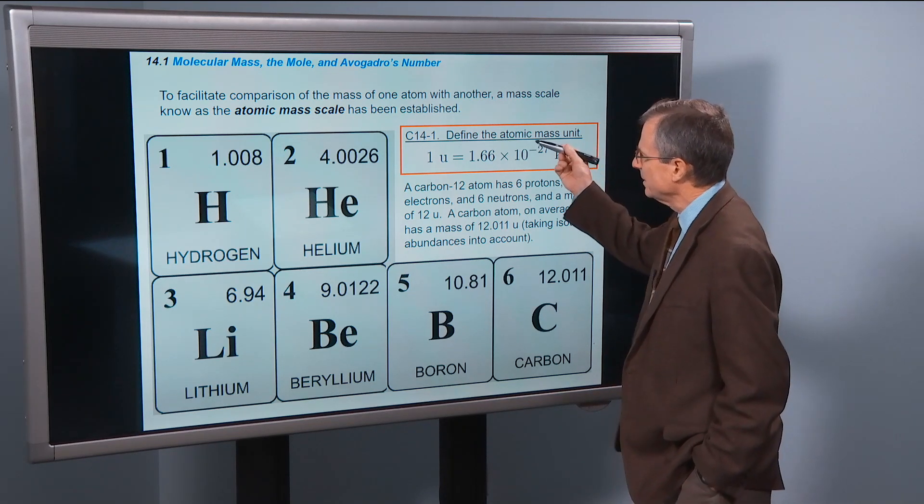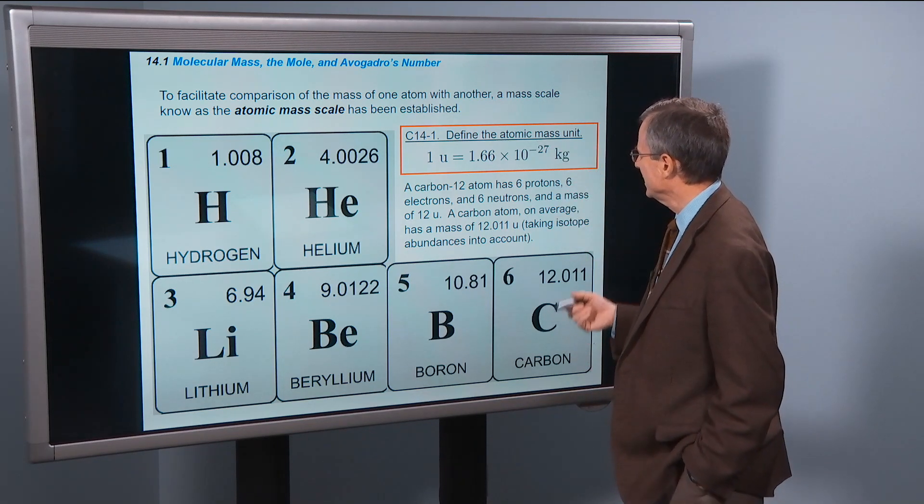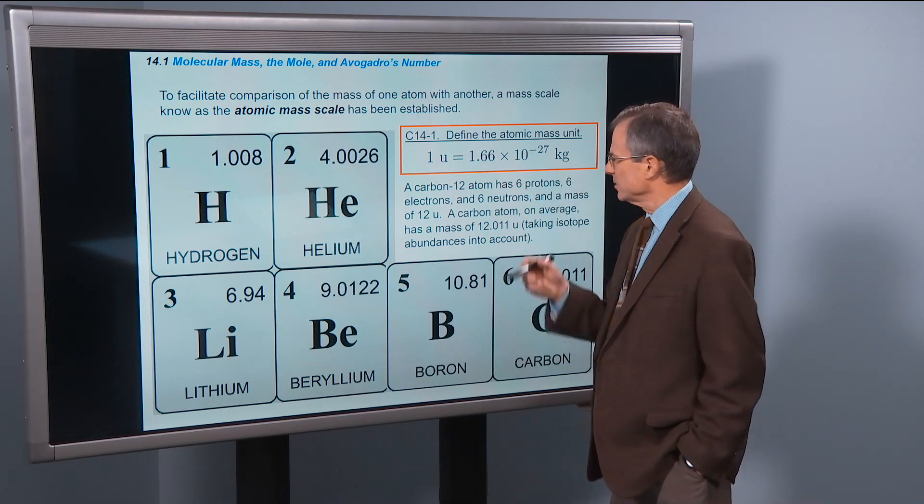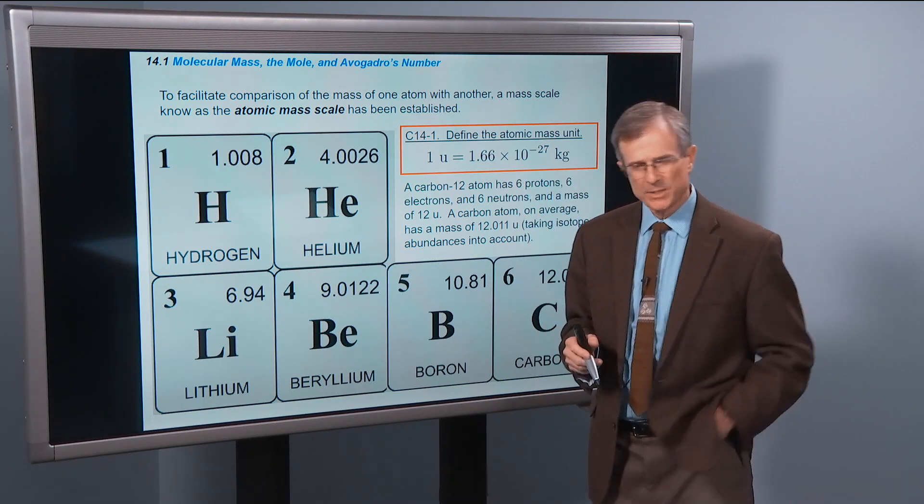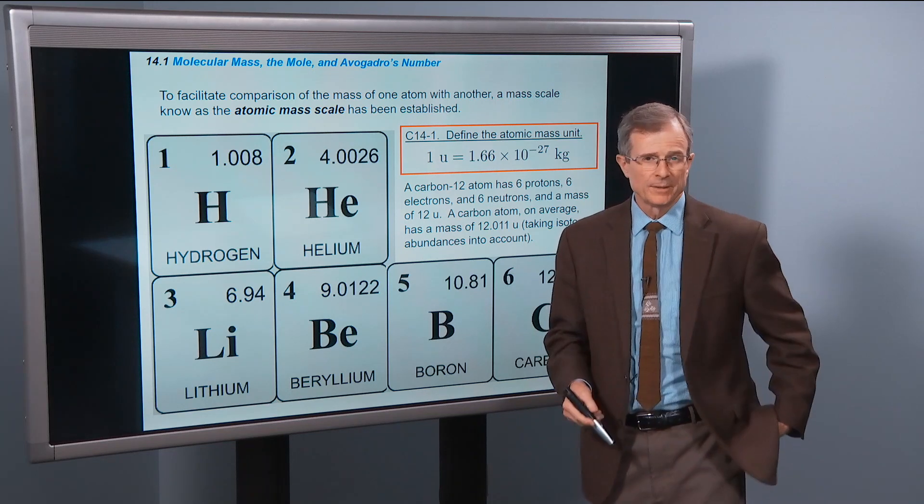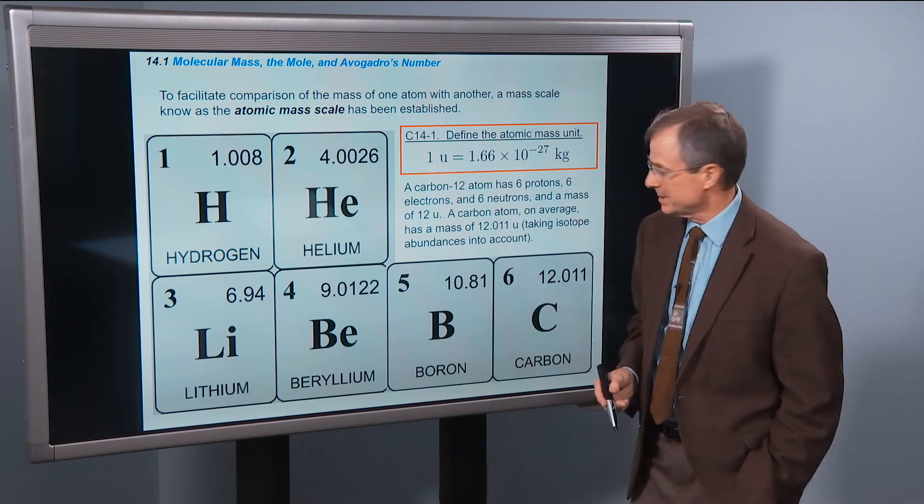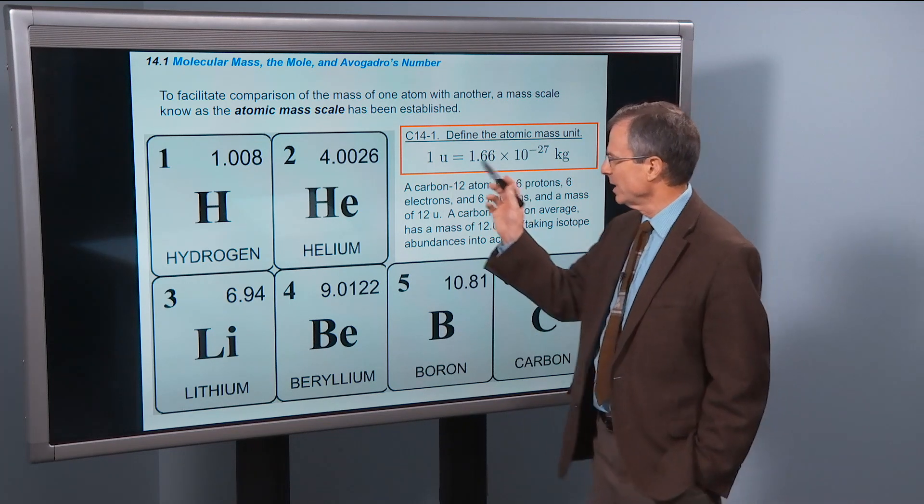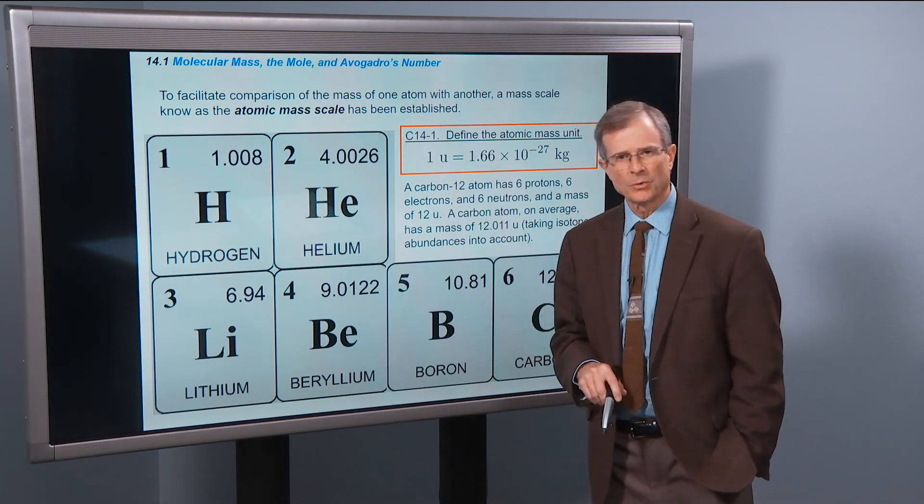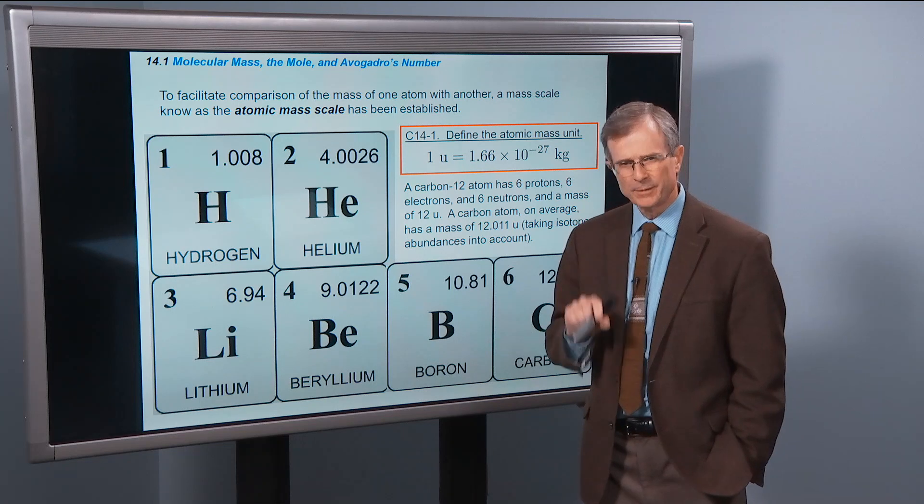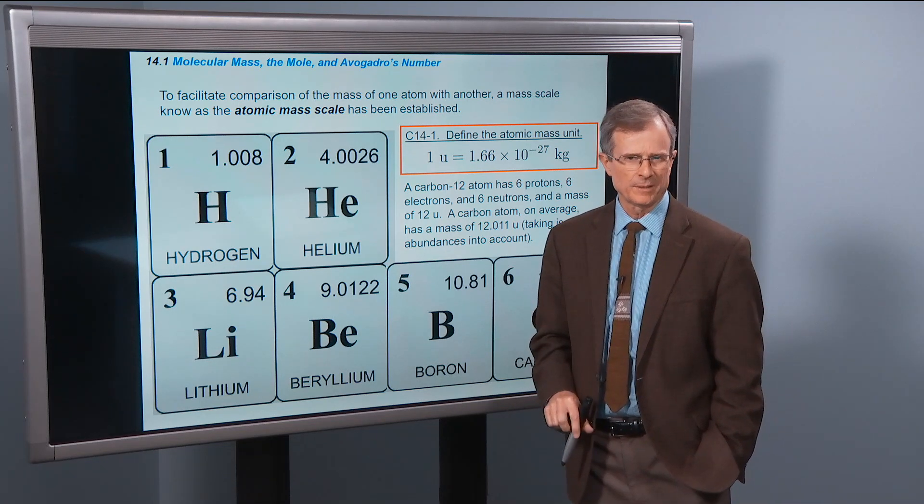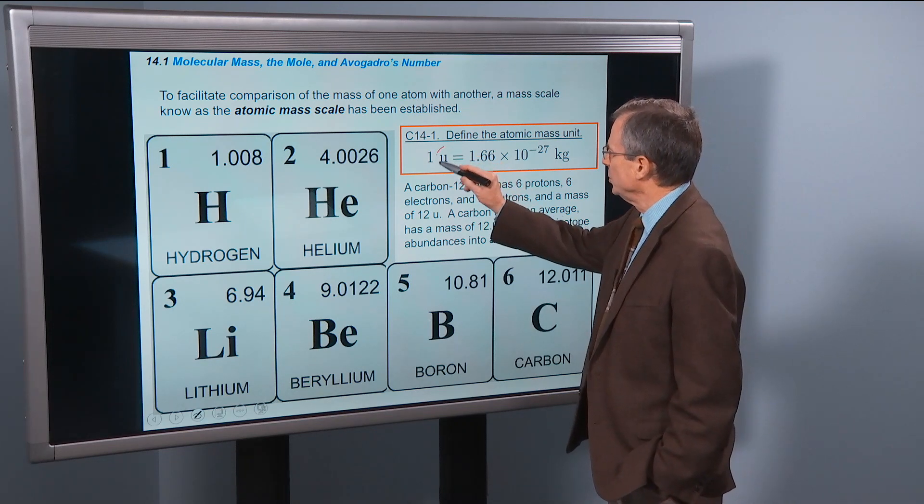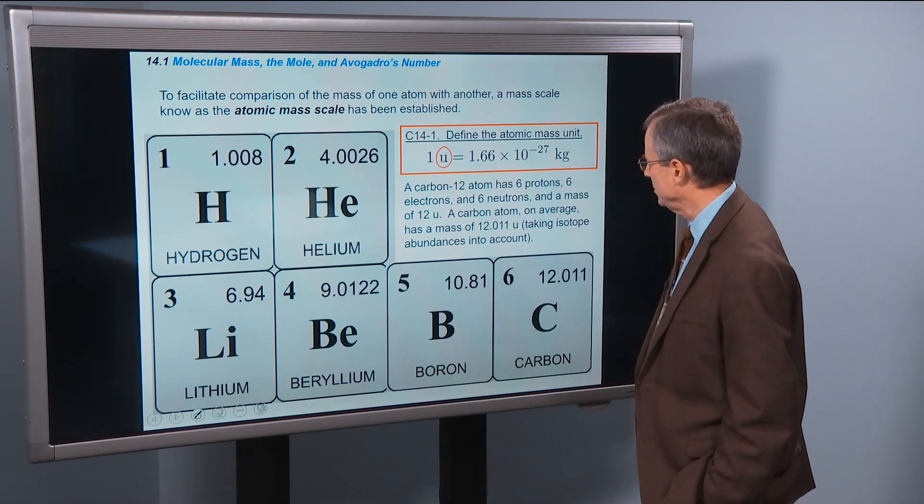The first concept is to define the atomic mass unit, defined as 1.66 times 10 to the minus 27 kilograms. I'd like to invite you to commit that to memory. This is roughly the mass of a proton or a neutron. It's called U, the atomic mass unit.